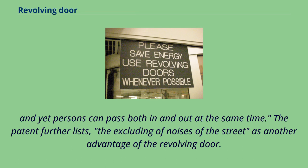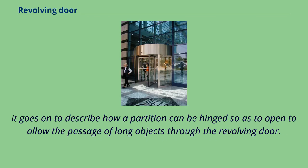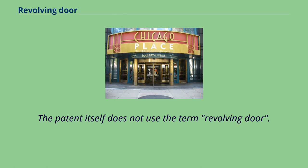Persons can pass both in and out at the same time. The patent further lists that the excluding of noises of the street is another advantage of the revolving door. It also describes how a partition can be hinged so as to allow the passage of long objects through the revolving door. The patent itself does not use the term 'revolving door.'